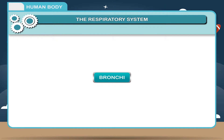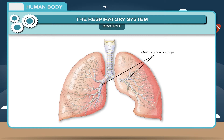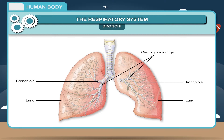Bronchi. Bronchi are also made up of cartilaginous rings. Each bronchus leads into the lung on its side. The bronchi are divided into a number of small tubes called bronchioles.